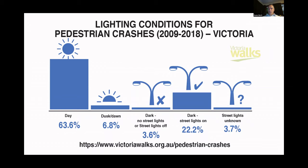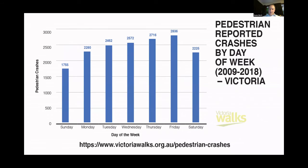We have pretty good data on the lighting conditions when people are injured. Most crashes are occurring during the day, but there is a significant proportion at night. Even though that's a smaller proportion than during the day, people are obviously less active at night, so you could argue this indicates people are at a higher risk at night. There's also a distinct trend through the week — a low on Sundays, with the number of crashes building up through the week, peaking on Friday, then dropping back on Saturday and Sunday.